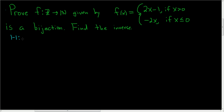In this case, 1-to-1 means the following: for all x and y in the domain, which is the set of integers, whenever the outputs are the same — so whenever we have f(x) equal to f(y) — this should imply that x is equal to y.